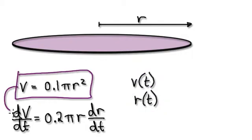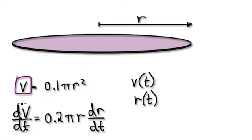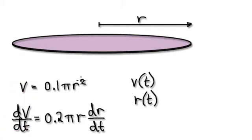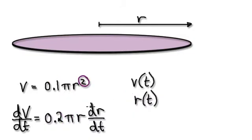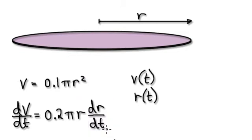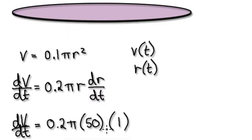From this volume equation, use implicit differentiation. Differentiating with respect to time gives dV/dt on the left. On the right, the thickness is a constant, and because r is a function of time you differentiate r normally but then multiply by dr/dt using the chain rule.